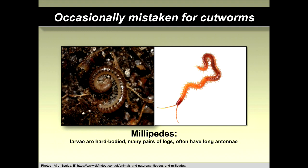Millipedes are also brought in as suspected cutworms, but look at the number of legs — many more than three pairs of true legs or five pairs of fake legs. They're somewhat worm-like and round, but they're not cutworms and don't really cause damage in agricultural crops.